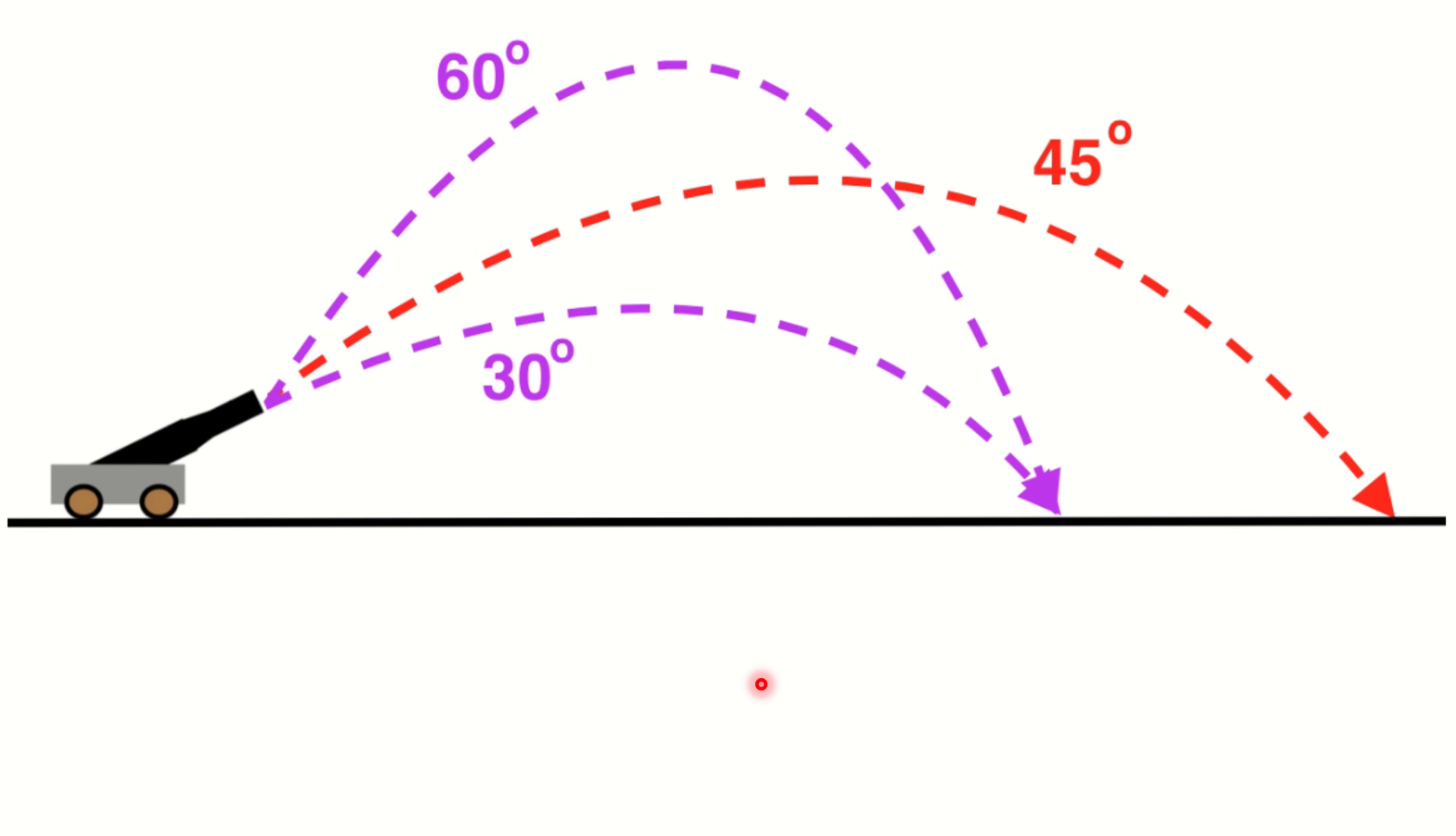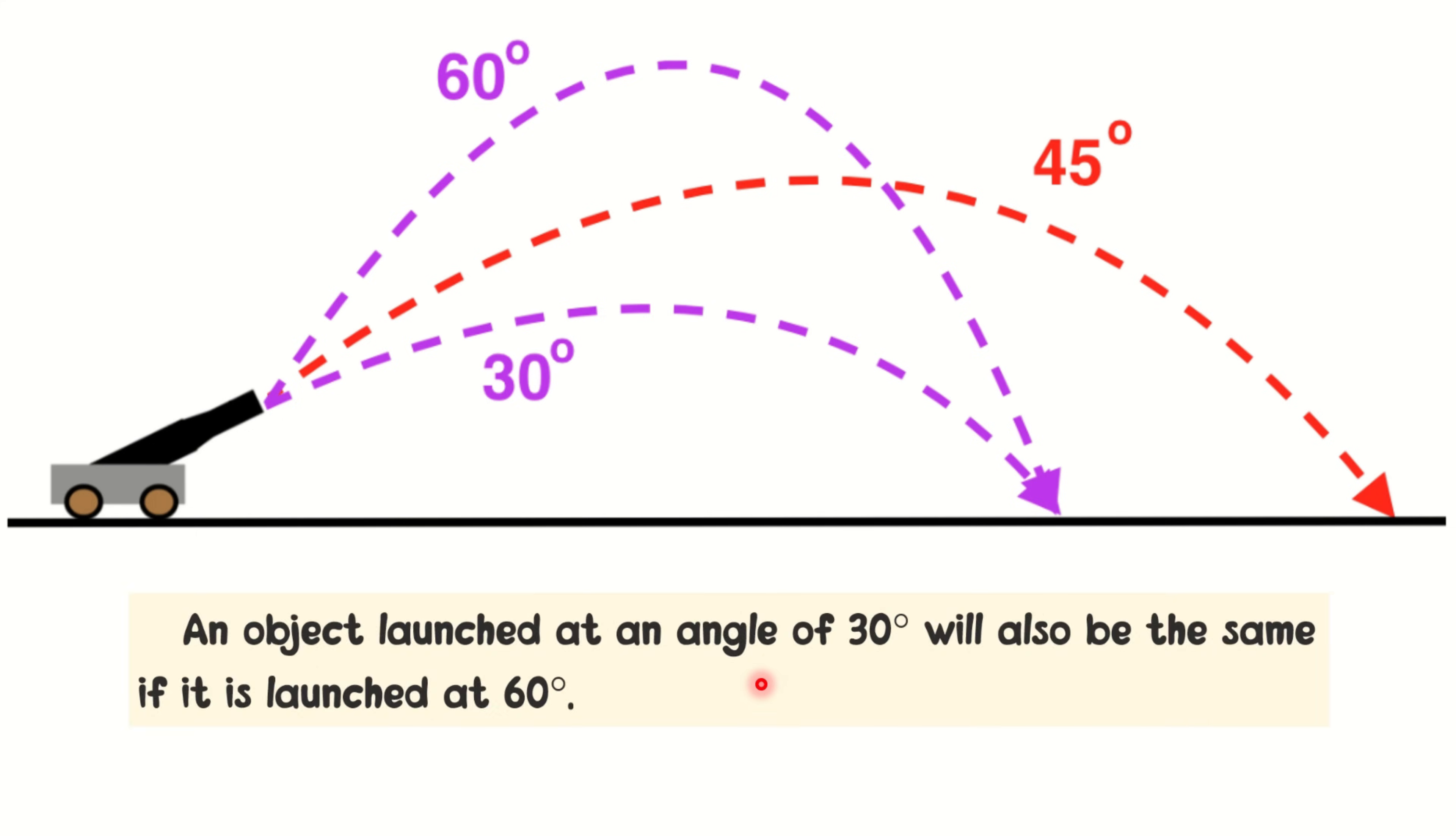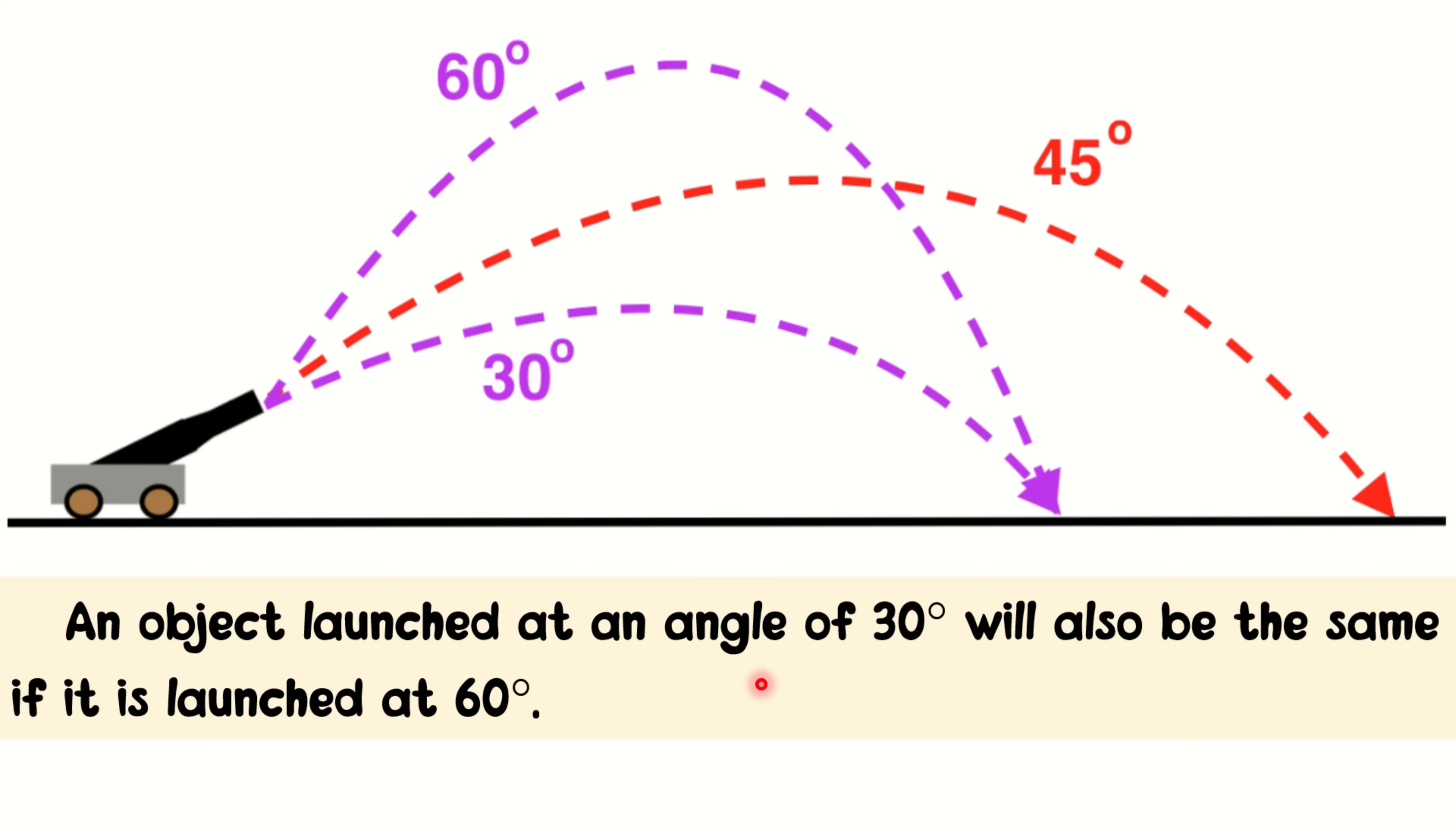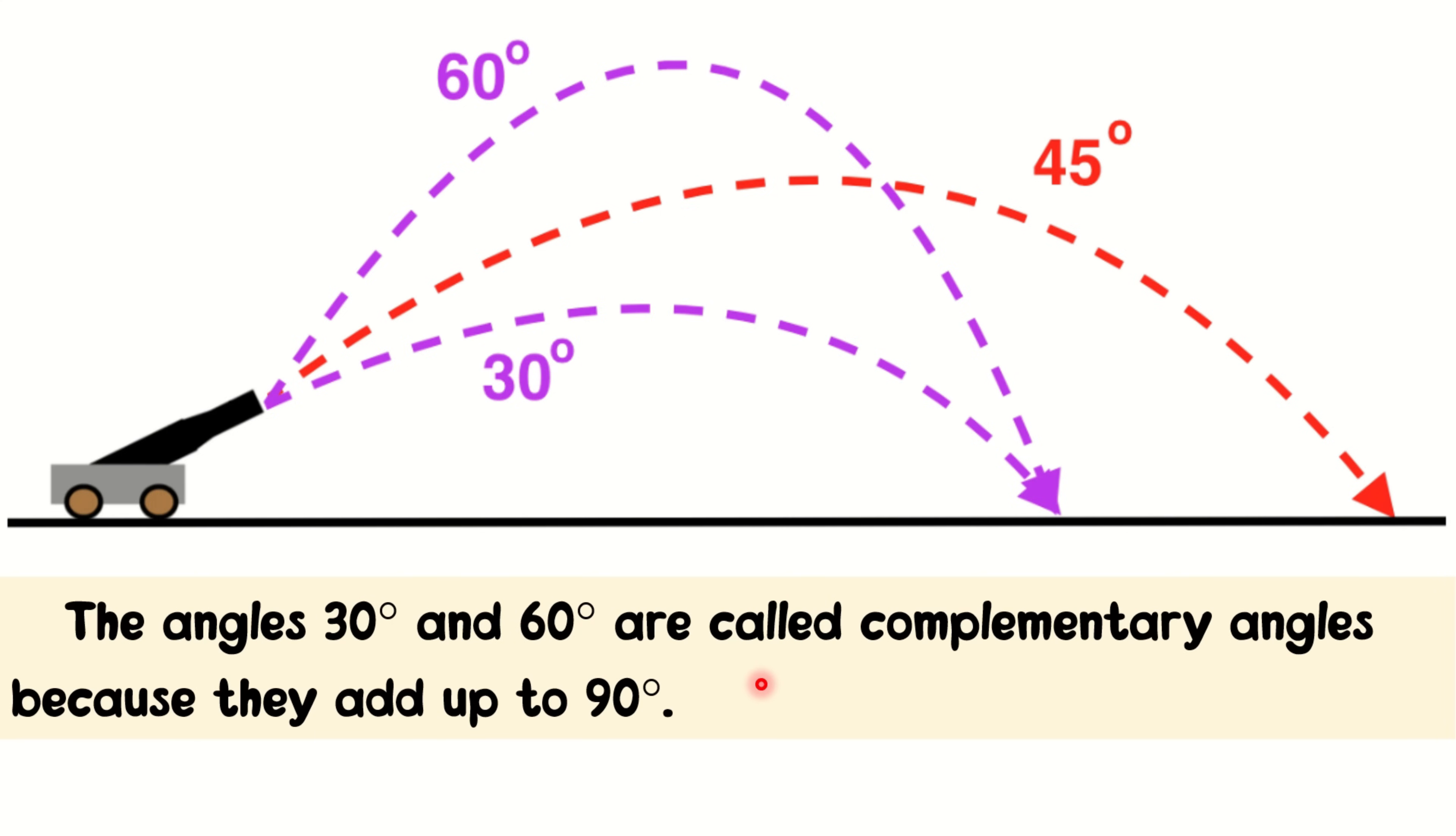The angle of release affects the range and height of a projectile. The maximum range is achieved if the projectile is fired at an angle of 45 degrees with respect to the horizontal component. An object launch at an angle of 30 degrees will also be the same if it is launched at 60 degrees. The angles 30 and 60 degrees are called complementary angles because they add up to 90 degrees.